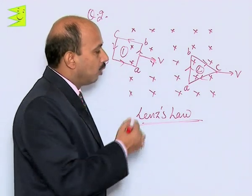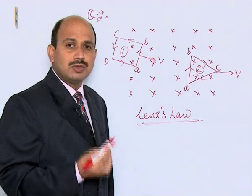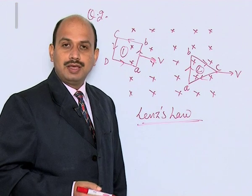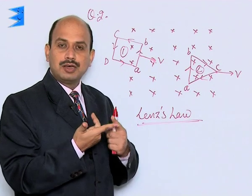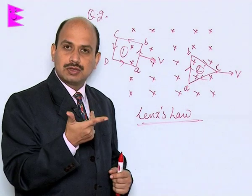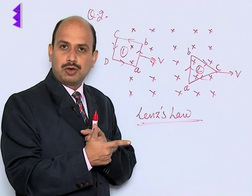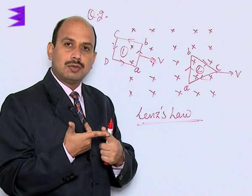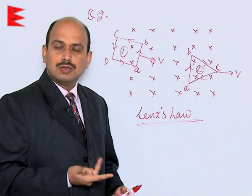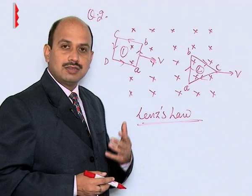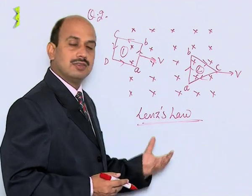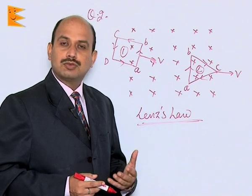Now, we can also use Fleming's right-hand rule to decide the direction of current, but it is better to explain using Lenz's law. Fleming's right-hand rule states: if you take the four fingers, the center finger, and the thumb of the right hand such that all are perpendicular to each other — the thumb points in the direction of motion of the conductor, the four fingers point in the direction of the magnetic field — then the center finger will show the direction of the induced current. This is the question based on Lenz's law and how to decide the direction of induced current.